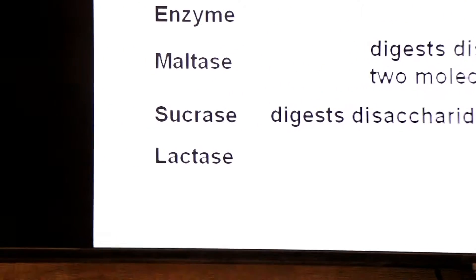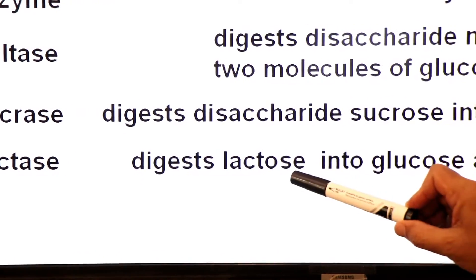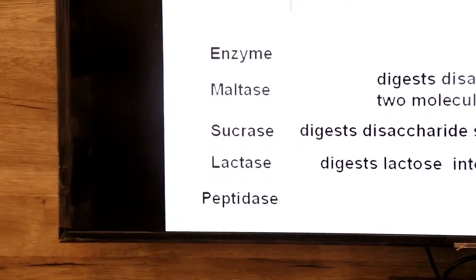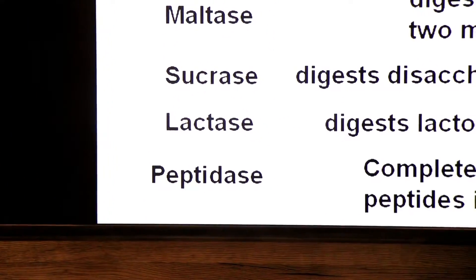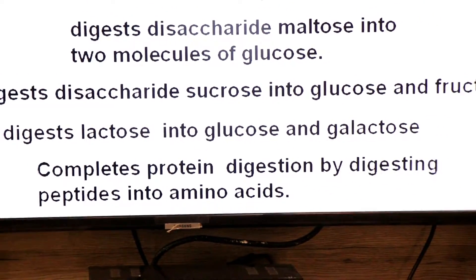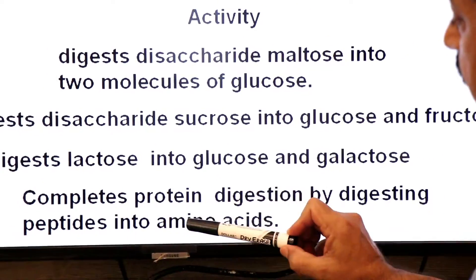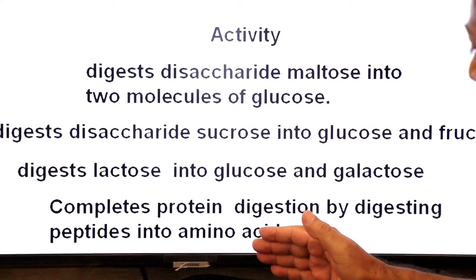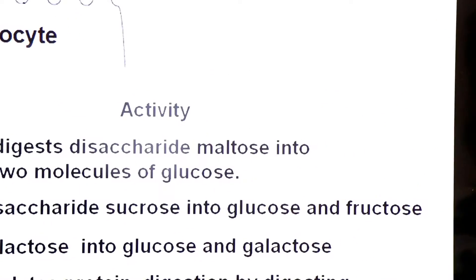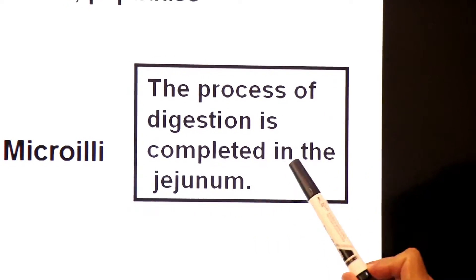Another brush border enzyme is lactase, a lactose-breaker enzyme. It digests lactose into glucose and galactose. The enzyme peptidase completes protein digestion by breaking peptides into amino acids. Peptides are shorter chains of amino acids, and amino acids are the end products of protein digestion. The process of digestion is completed in the jejunum.